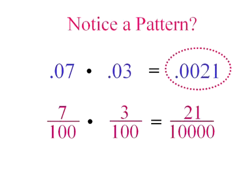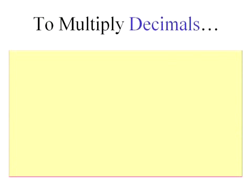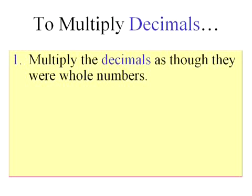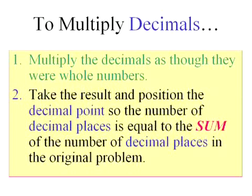Well, we can use this pattern to multiply decimals. The rule is going to be to multiply decimals. Multiply as though they were whole numbers, in other words, as though there wasn't a decimal place at all. Then take that result, that answer, and position the decimal point so that the number of places is equal to the sum, the adding up, of the number of decimal places in the original problem.